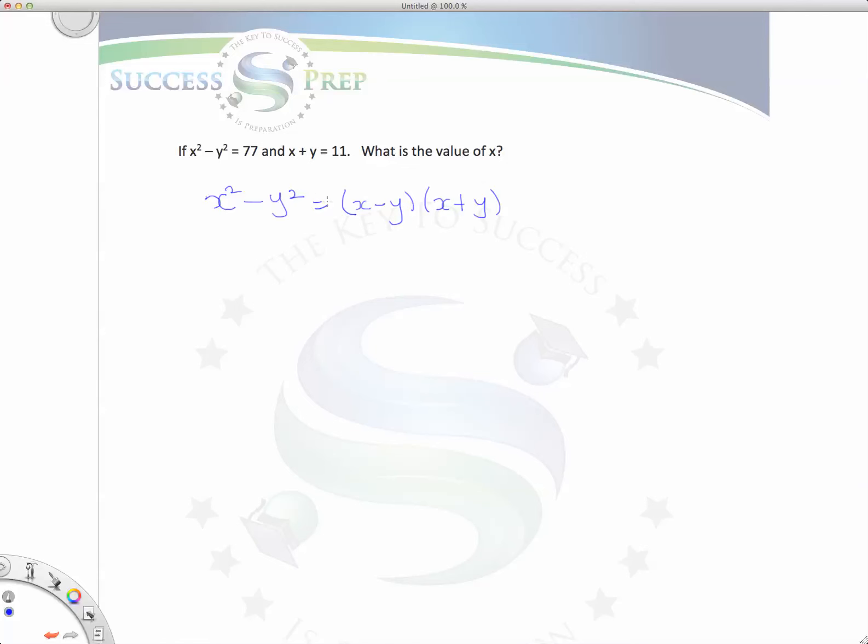So x squared minus y squared, which is equal to x minus y times x plus y, is going to be equal to 77. Using this part of my equation, I'm going to go back ahead and plug in some information. The value of x plus y is 11. So I'm going to say x minus y times 11 is equal to 77.